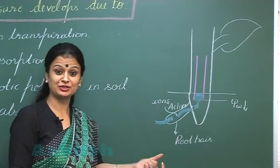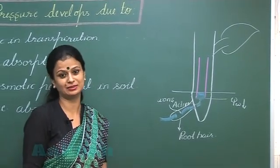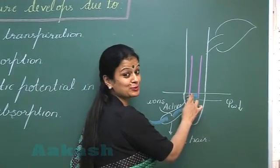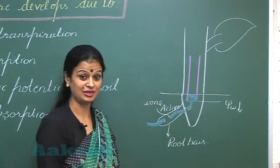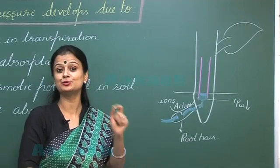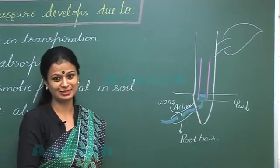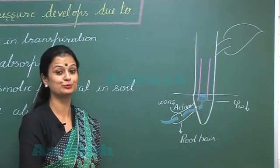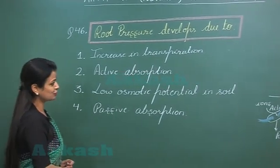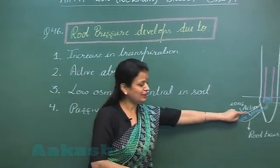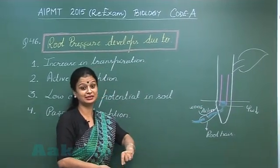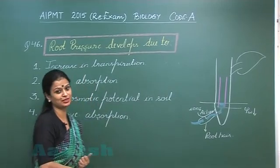Due to water absorption, the xylem channels get filled with water, which forms a positive hydrostatic pressure. This positive hydrostatic pressure formed in the root tracheid elements is what we call root pressure. So, active pumping of ions inside the root results in a water potential gradient, which in turn forms the root pressure.